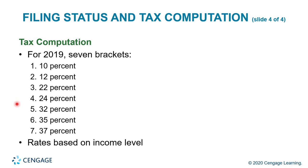For tax computation in 2019, there are seven tax brackets, and these brackets depend on the rates based on income level. You can be in the 10%, 12%, 22%, 24%, 32%, 35%, or 37% tax bracket based on your income level from your AGI.